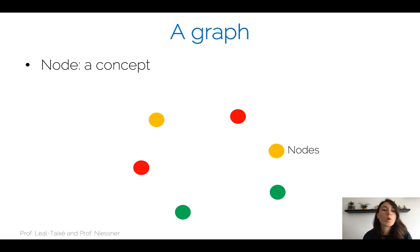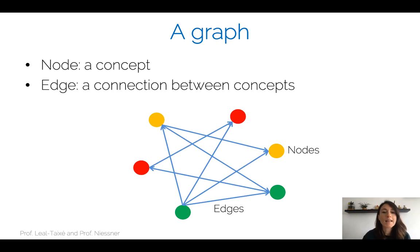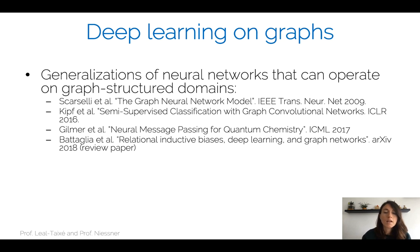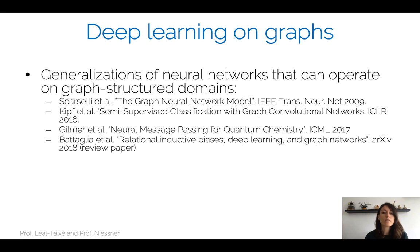Let's start by defining what a graph is. A graph contains nodes and edges. Nodes represent concepts — for example, friends in your social network — and edges represent connections between those concepts, such as whether you are friends with another person. There has been a lot of work on deep learning on graphs, which are essentially generalizations of neural networks that can operate on domains with graph structure.